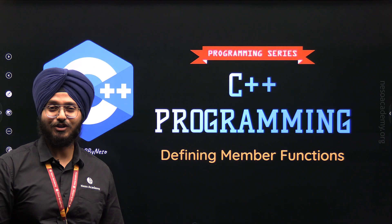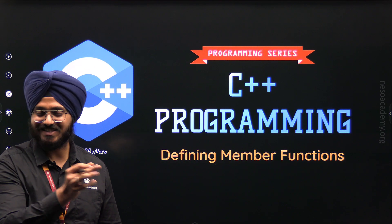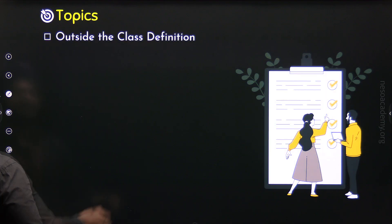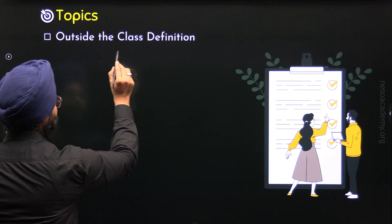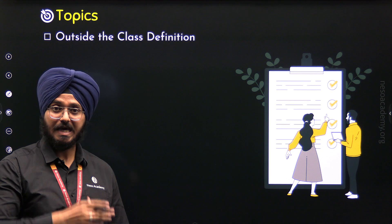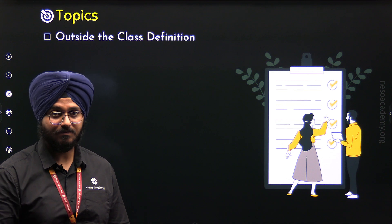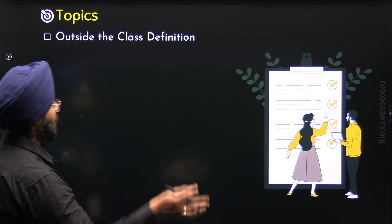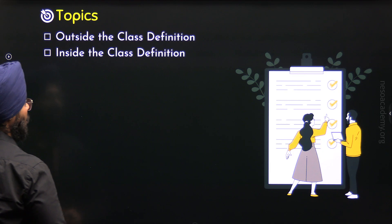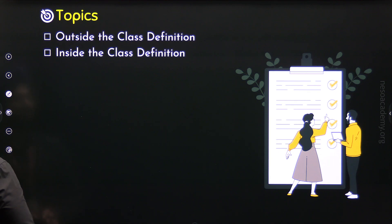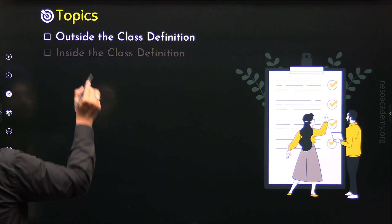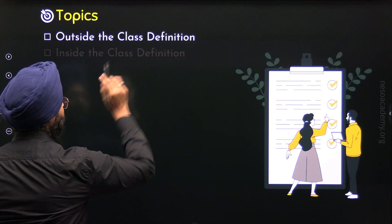So without any further delay, let's get started with this lecture and see what topics we have. The first topic is defining member functions outside the class definition. We will first learn how to define member functions outside the class definition, and then we will learn how to define member functions inside the class definition. Let's start with the first topic: defining member functions outside the class definition.